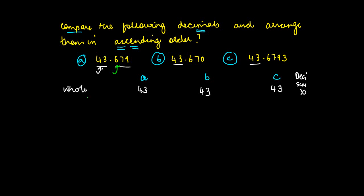Once the whole number parts are equal, we move on to the decimal part. The first one we consider is the tenth place. In a the tenth place is 6, in b it is again 6, and in c the tenth place is 6. Since all three are equal, it doesn't help us in decision making.